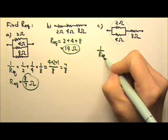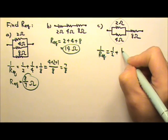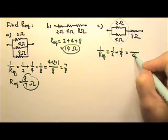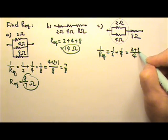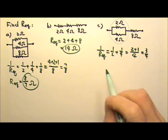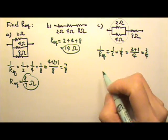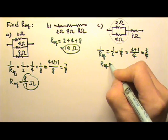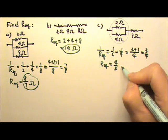we do 1 over, this equals 1 over 2 plus 1 over 4, so this will be 3 fourths. And then we have to remember to flip this. So the equivalent is 4 thirds of an ohm.